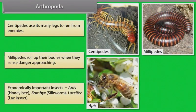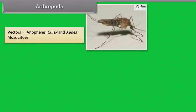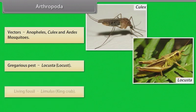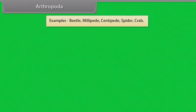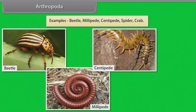Economically important insects: Apis, that is honeybee; Bombyx, that is silkworm; and Laccifer, that is lac insect. Vectors: Anopheles, Culex and Aedes mosquitoes. Gregarious pest: Locusta, that is locust. Living fossil: Limulus, or King Crab. Examples: Beetle, Millipede, Centipede, Spider, Crab.